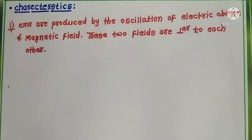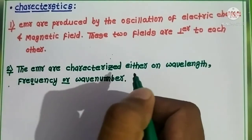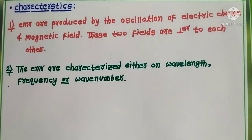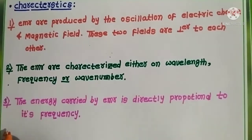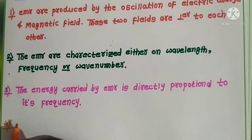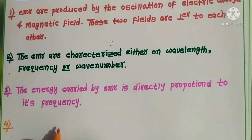The second characteristic is that electromagnetic radiation are characterized by wavelength, frequency, or wavenumber. The third characteristic is that the energy carried by electromagnetic radiation is directly proportional to its frequency. The fourth characteristic is that the absorption and emission of electromagnetic radiation are quantized — a fixed amount of energy is required to bring changes inside the molecule, and each quantum is called a photon, represented as E = hν.